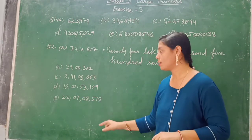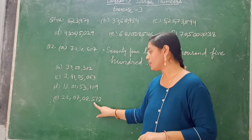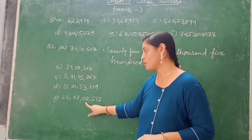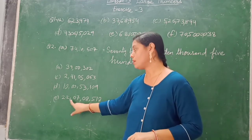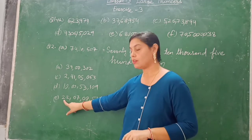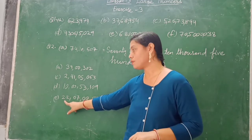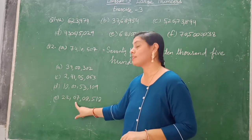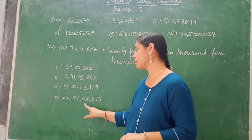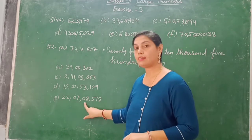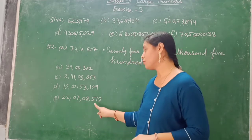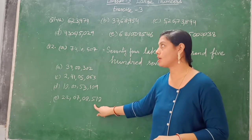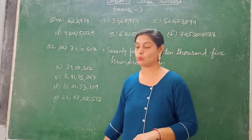This one: ones period, thousands period, lakhs period, crores period. So what you will write? 22 crore, 7,008,518. In this way you can complete question number 2.